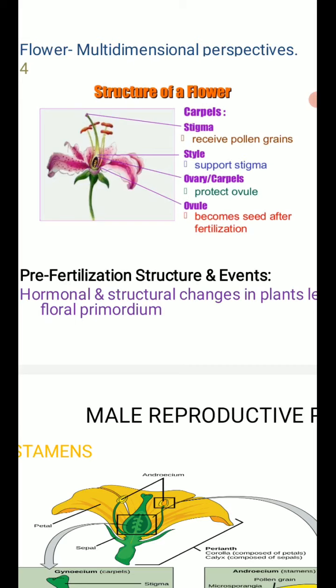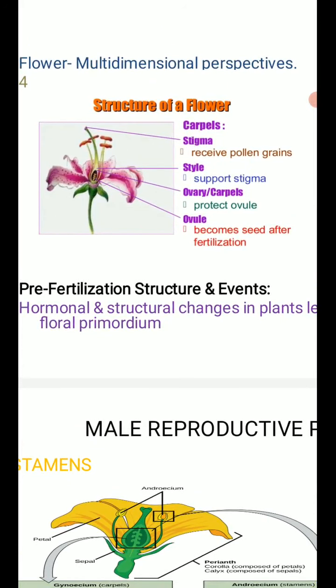In plants, we have already studied which is the vegetative part and reproductive part. The plant root system and shoot system — that is leaves — is called the vegetative part of the plant. A condensed shoot modification is what we call the flower, and that flower is known as the reproductive organ of plants.